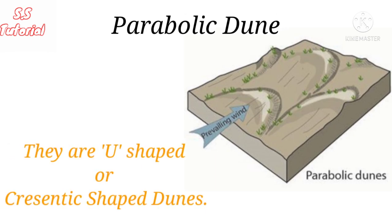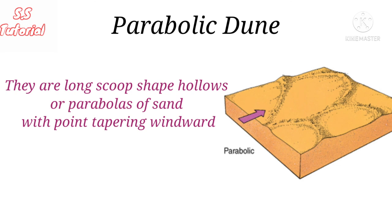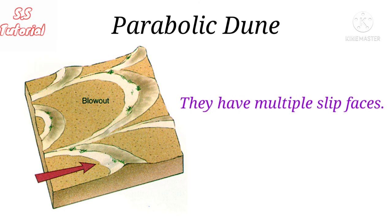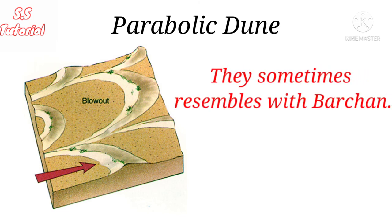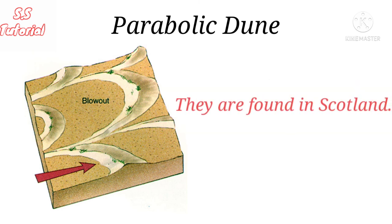Parabolic dunes are U-shaped or crescent-shaped dunes whose long axis is transverse to the dominant wind direction. They are long, scoop-shaped hollows or parabolas of sand with points tapering windward. They have a convex slope on the leeward side and a concave slope on the windward side, with multiple slip faces. A parabolic dune resembles a barkhan dune, but its horns point in the opposite direction. They are found in Scotland.